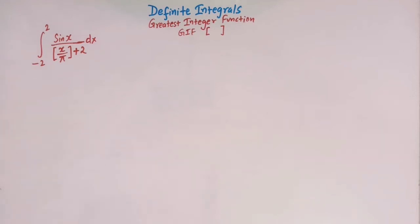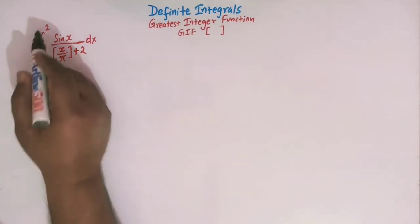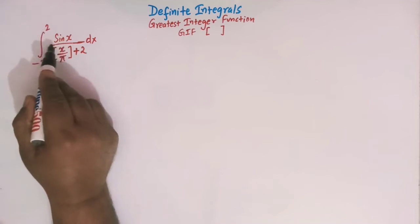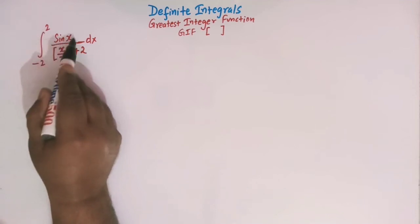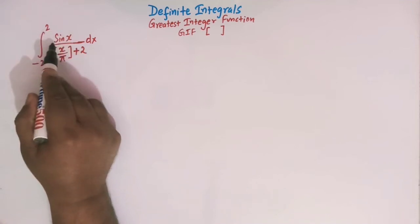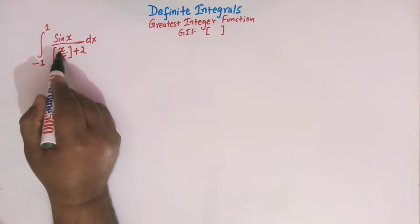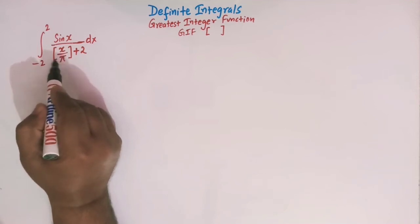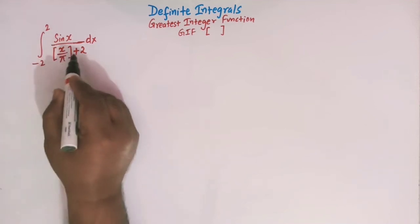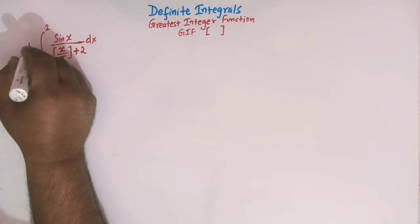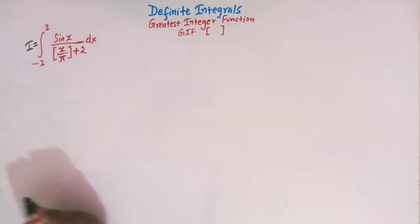So here we have to solve this integral that is from minus 2 to 2, and our integrand is sin x over the greatest integer of (x over pi) plus 2. Let us call this integral as I.